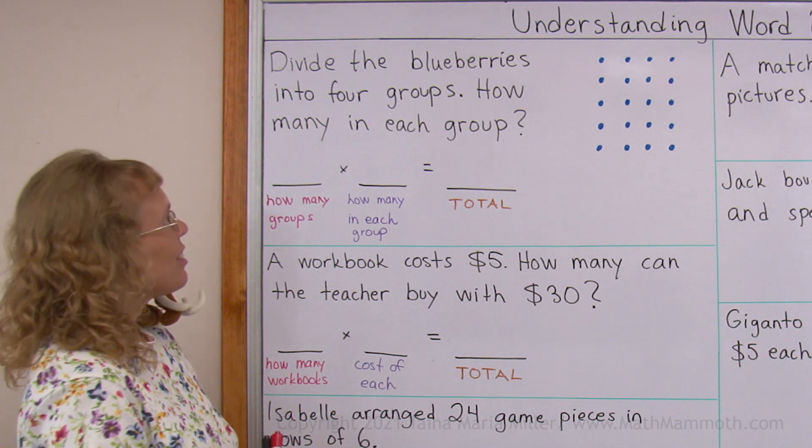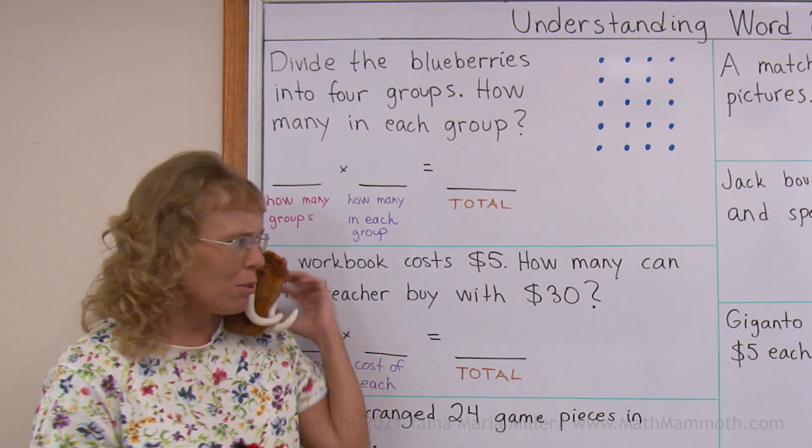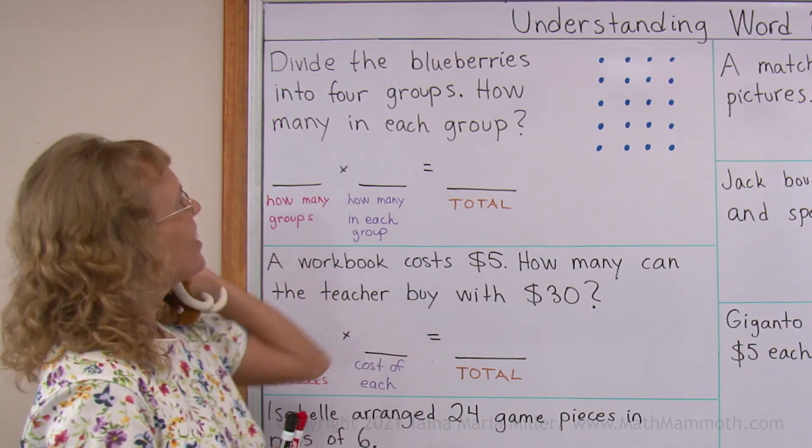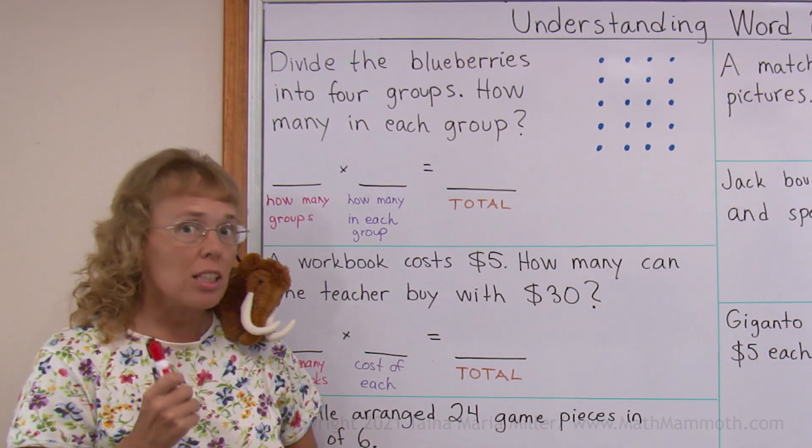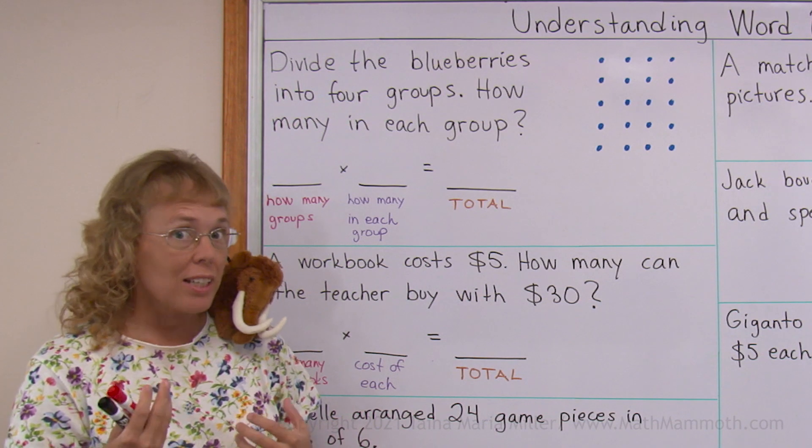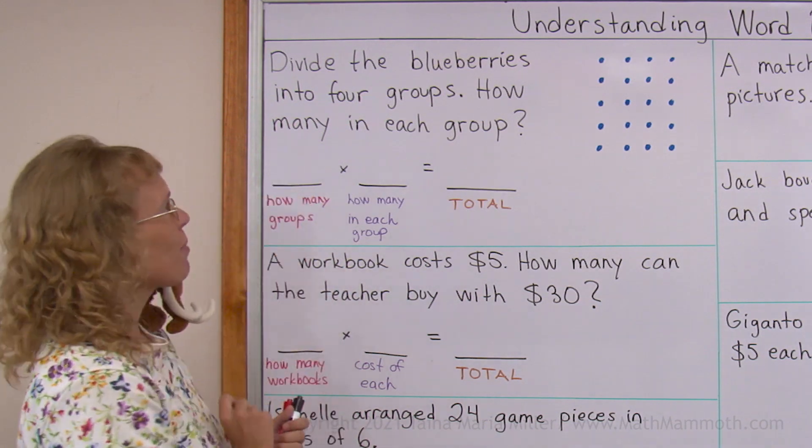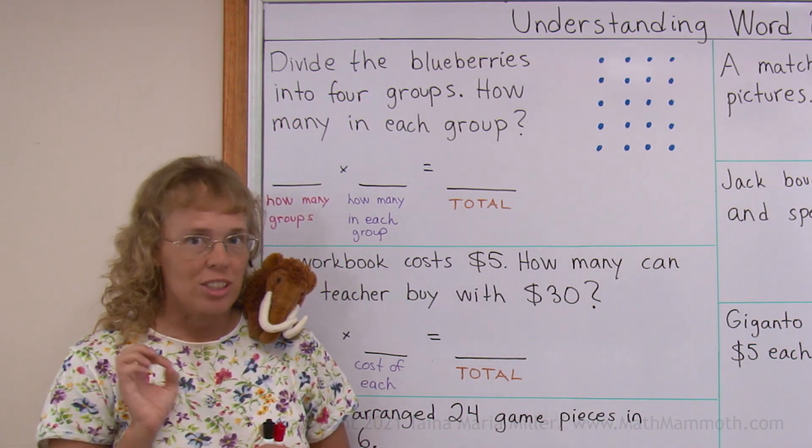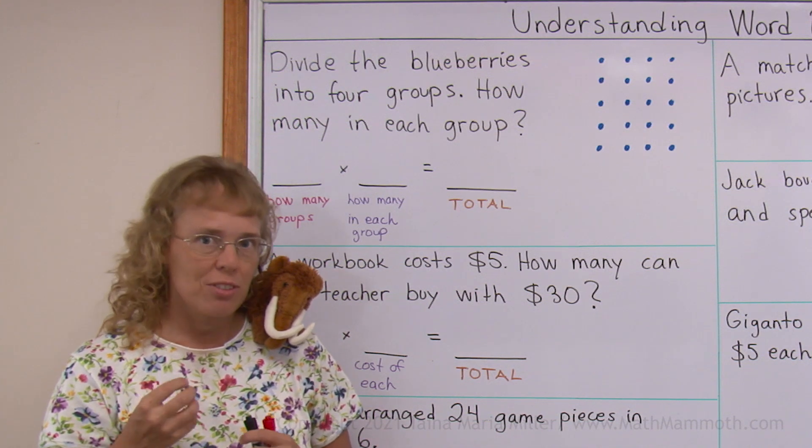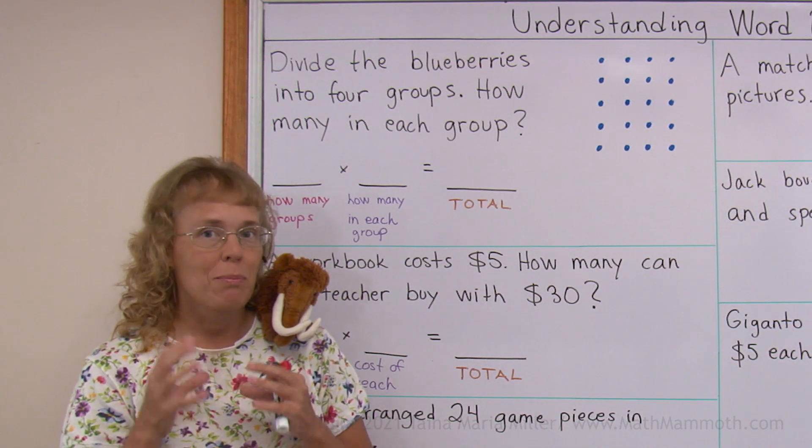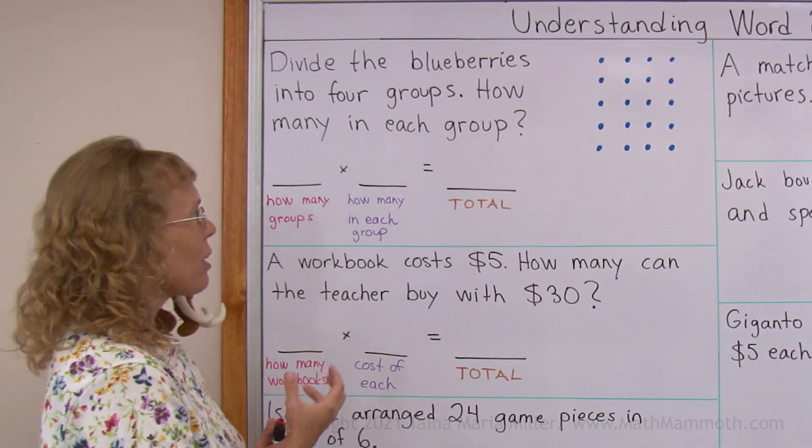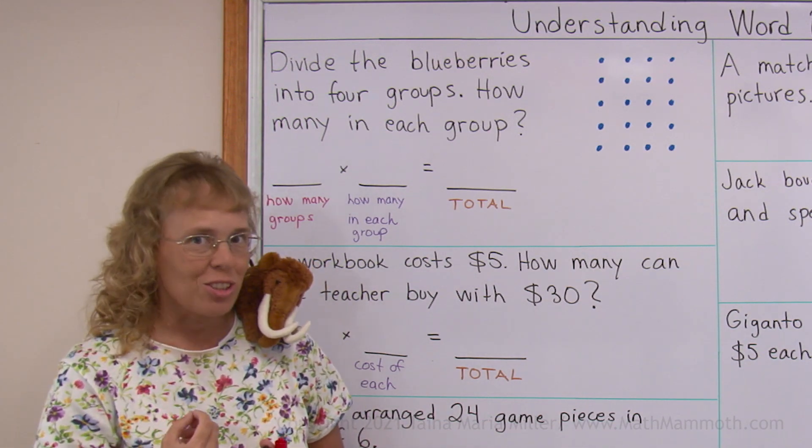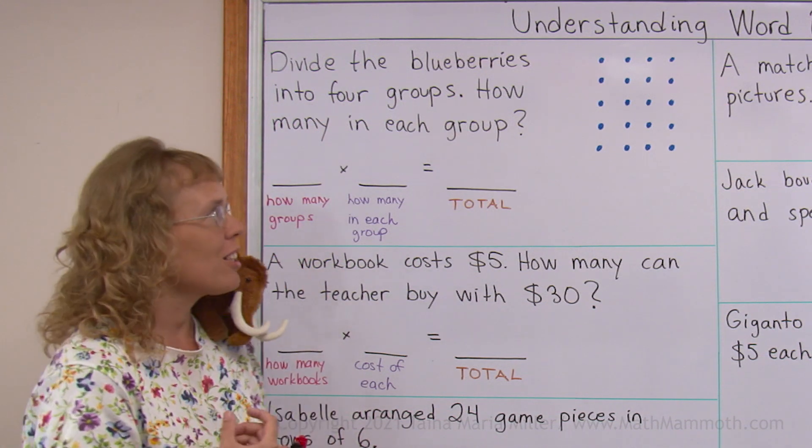The first one: divide the blueberries into four groups. How many in each group? This looks like a division word problem, right? Because it says divide. But both division and multiplication have to do with groups, many groups of the same size. So that's why we actually can solve this by multiplication.